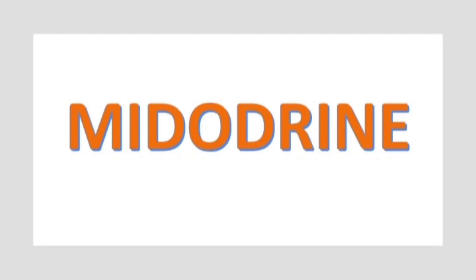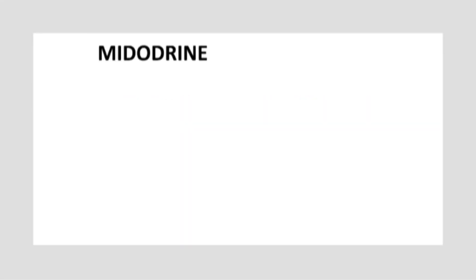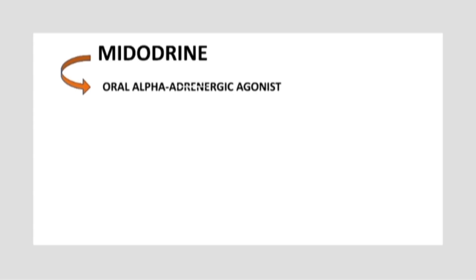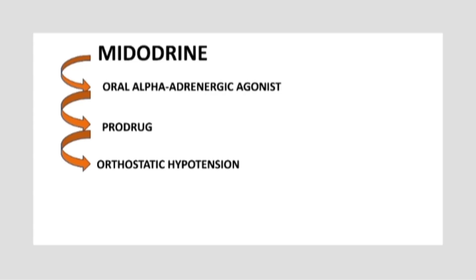Midodrine. Let us talk about its pharmacology, therapeutic applications, and safety profile. Midodrine is an alpha-adrenergic agonist, meaning it stimulates the receptor for its action. It is taken orally in an inactive form, which means it is a prodrug. It is clinically used to treat orthostatic hypotension. The most common brand names for midodrine are Orvaten and ProAmatine.